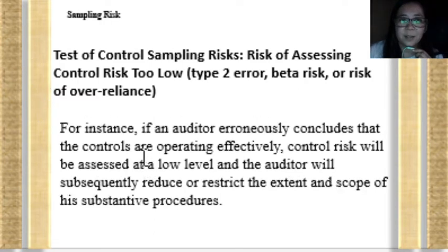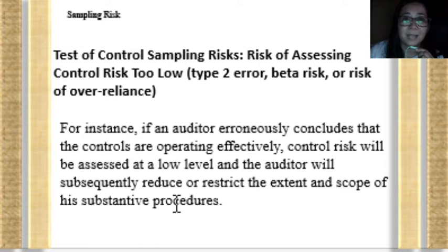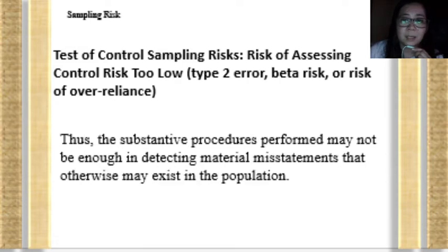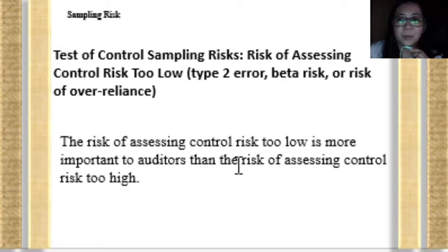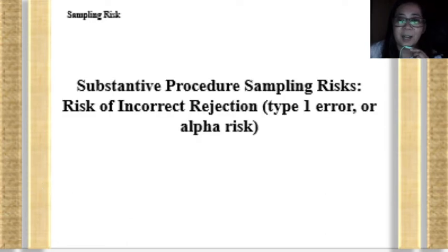For instance, if the auditor erroneously concludes that the controls are operating effectively, control risk will be assessed at a low level. The auditor will subsequently reduce or restrict the scope, performing less substantive tests — meaning fewer items examined. The tendency is he will not detect items that may include material misstatements, so the substantive procedures performed may not be enough to detect material misstatements that otherwise exist in the population. This is a heavier risk because he might provide an inappropriate opinion about the fairness of the financial statements.